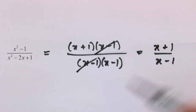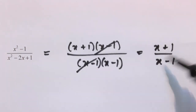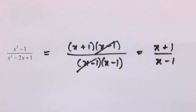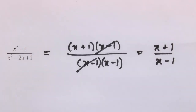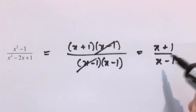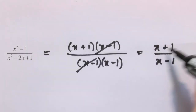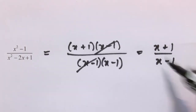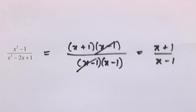There's no further simplification we can do there. We can't cross out the x's or the 1's because they're not factors of either the numerator or the denominator. Well, 1 is a factor of anything, but that doesn't mean we can cancel out these ones.